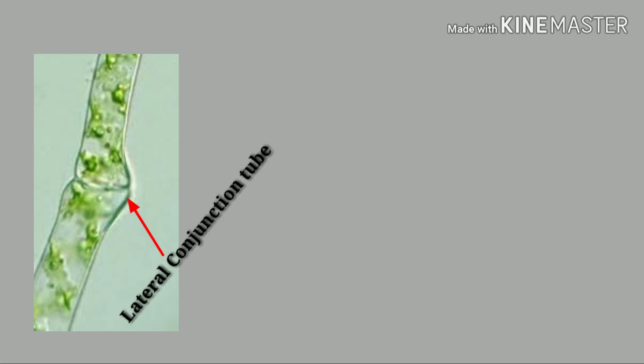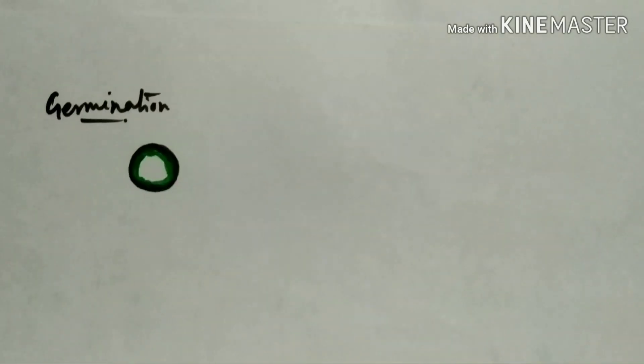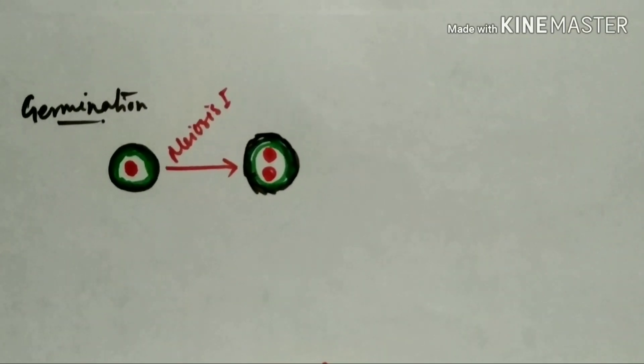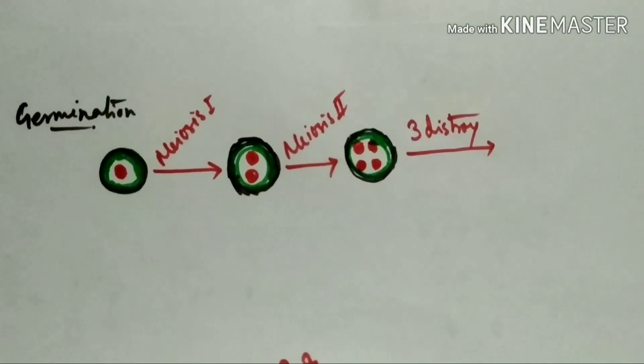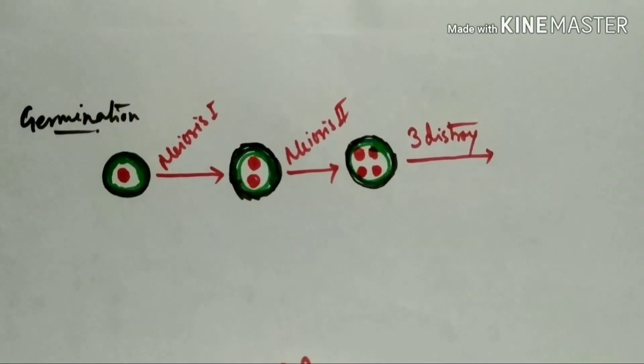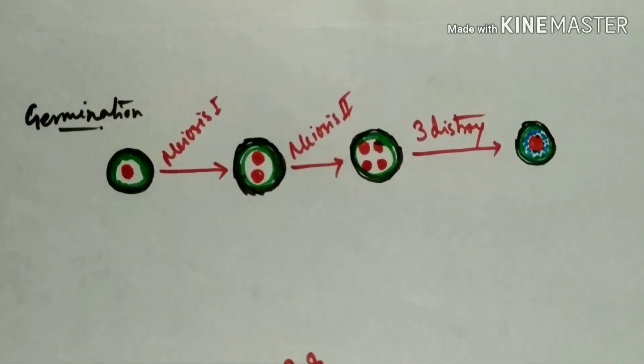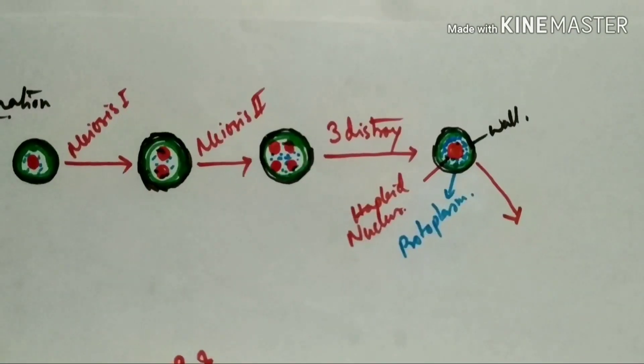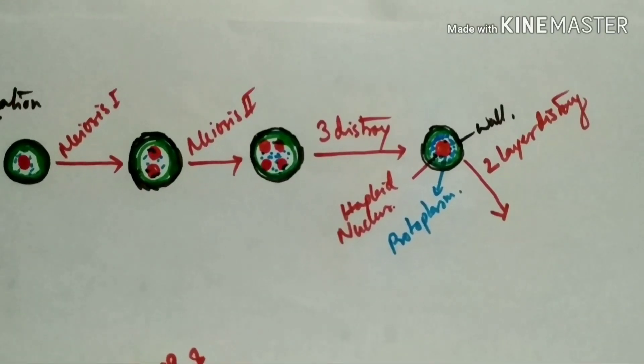Now germination of new Zygnema: zygospore contains a diploid nucleus. By meiosis 1, two nuclei are produced, and by meiosis 2, four nuclei are produced. Of them, three destroy, only a single nucleus that is haploid, some protoplasm, and three layers present at last stage of germination.